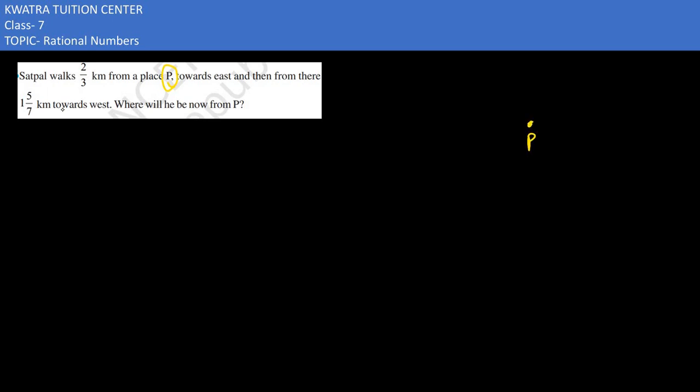So we have P. Now he is going 2 by 3 km from that place towards east. It is like 2 by 3 km travelled. And then from there, he is moving towards which end?